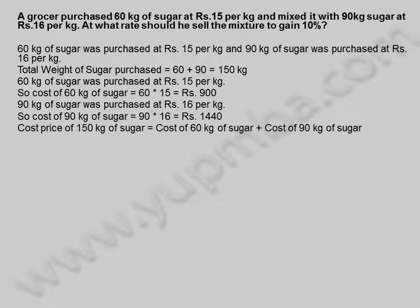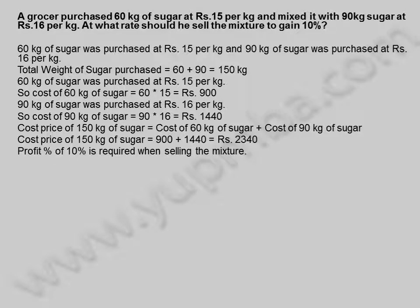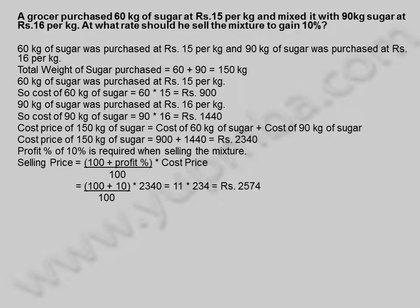Cost price of 150 kilograms of sugar is equal to cost of 60 kilograms plus cost of 90 kilograms, which equals 900 plus 1,440, which equals 2,340 rupees. A profit percentage of 10% is required. Selling price is equal to (100 plus profit percentage) divided by 100, into cost price, which equals 110 divided by 100 into 2,340, which equals 11 into 234, which equals 2,574 rupees.